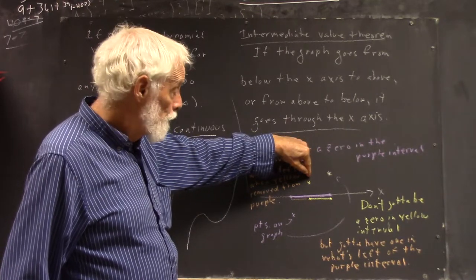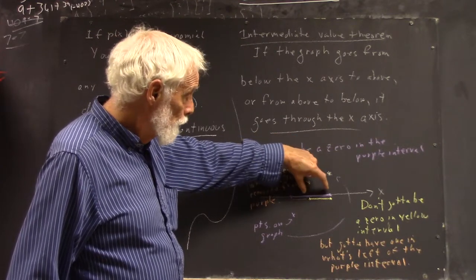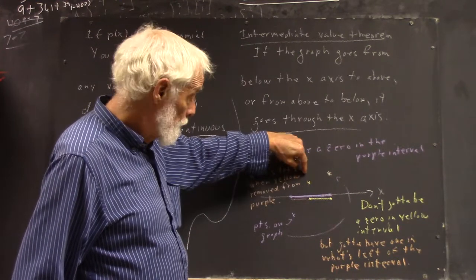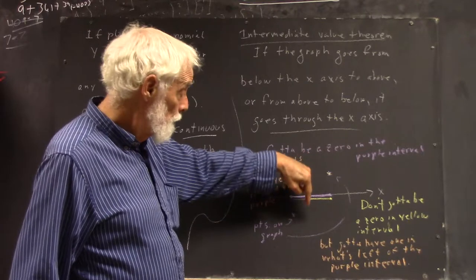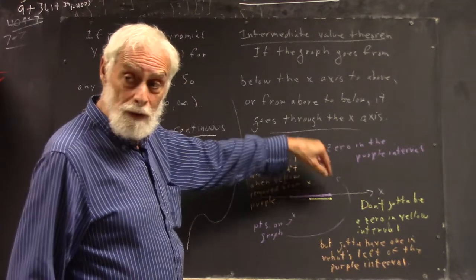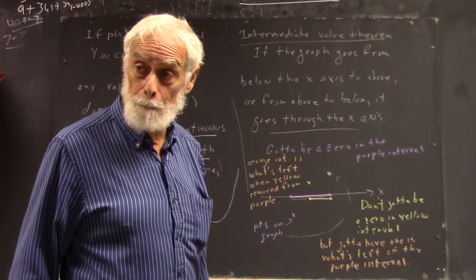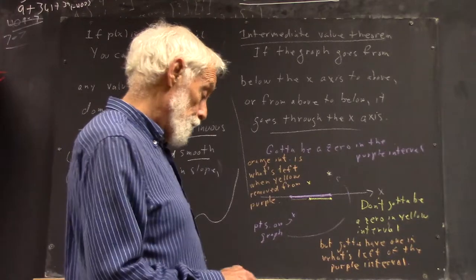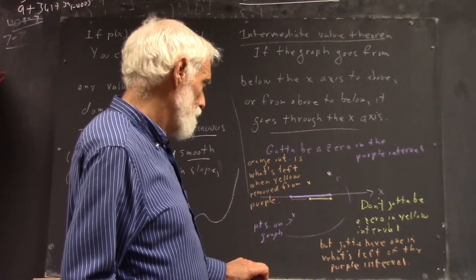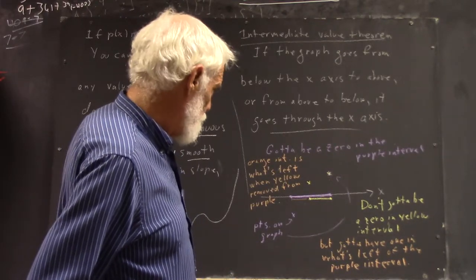And then I can determine whether zero occurs in this interval or this one, depending where this one is. If it had been below, then I'd have known that there's a zero in the yellow end. So it's a pretty simple idea, I want you to work on it.